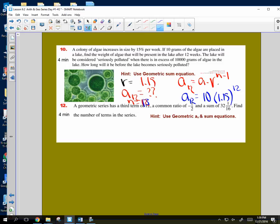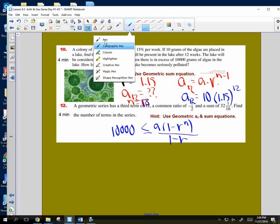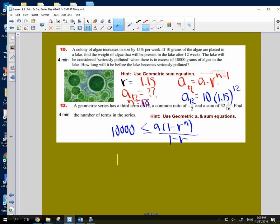For the lake can be considered seriously polluted when there is an excess of 10,000. So the sum of this is greater than or equal to 10,000. And so this was A times 1 minus R to the N over 1 minus R. Does that part make sense in your brain? Is that good? So then what I would do, I would then just plug the values in.